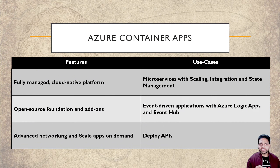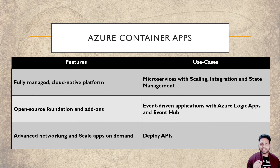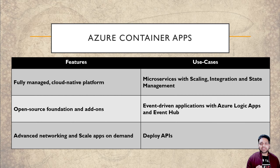In short, Azure Container Apps provides a sweet spot handling a medium level of complexity, as integration and scaling work very well and reduce the overhead of managing the underlying infrastructure. The different use cases are microservices where scaling, integration, and state management are required — in that case, ACA is a better option. Event-driven applications with Logic Apps and Event Hub are also well supported, where on-demand containers can be run based on different events.